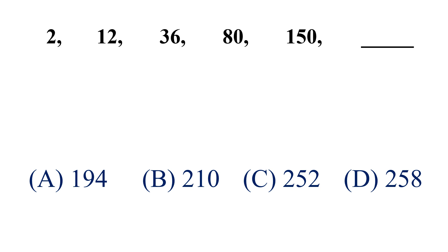Let's begin to solve the question. 12 minus 2, it's 10. 36 minus 12, it's 24. 80 minus 36, this is 44. 150 minus 80, this is 70.